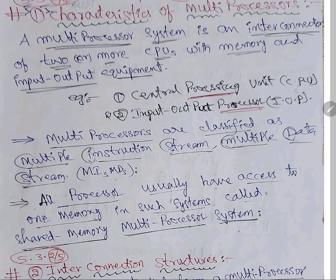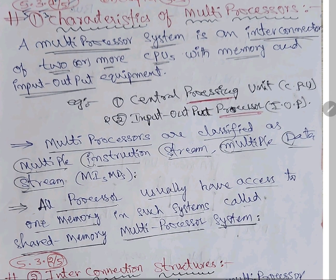Multiprocessor means many processors in a single system — that is called a multiprocessor. Now the characteristics: a multiprocessor system is an interconnection of two or more CPUs with memory and input-output equipment.